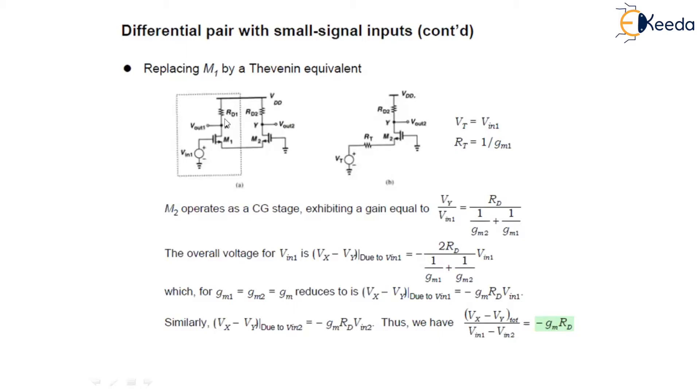And to calculate Vy, M1 drives M2 as a source follower. As shown in this figure, we can replace Vin1 and M1 by Thevenin equivalent, with Thevenin equivalent voltage Vt and equivalent resistance Rt equals 1 upon Gm1.